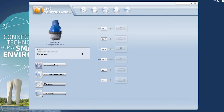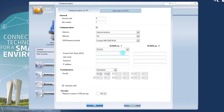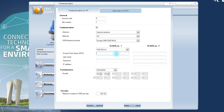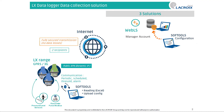If you want to communicate with WebLS, under Communication, you have to choose Web Server and then fill in the public APN provided by your operator. WebLS can also be used as a configuration manager while still communicating with a SCADA alongside it. By using the management account on WebLS, you can upload a new configuration to a data logger.